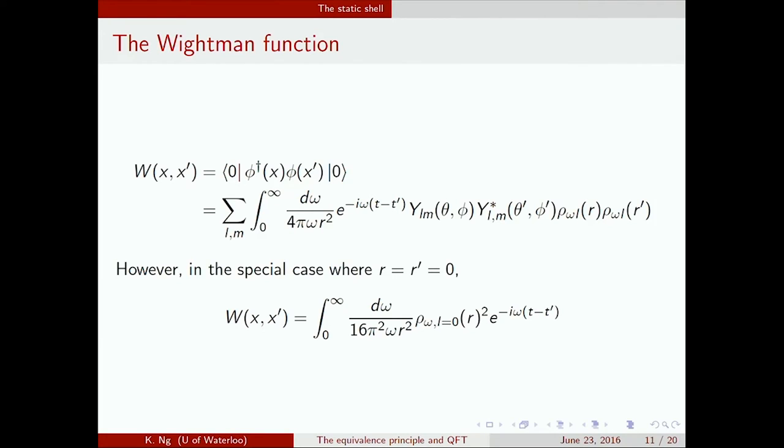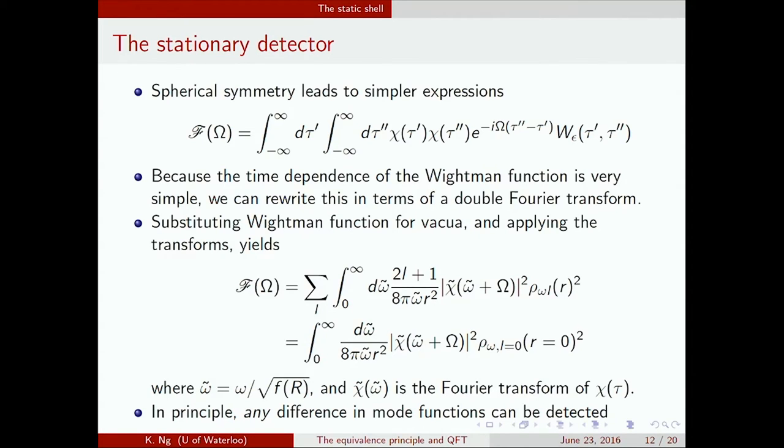We get this Wightman function. This is the general form for a spherically symmetric space-time. But in the special case where we put our detector at the center, we get a rather simple thing that depends only on basically the radial modes of angular number zero. So the spherical symmetry of the space-time leads to a simpler expression.